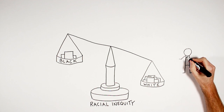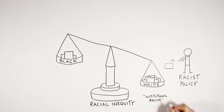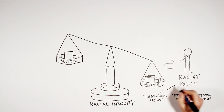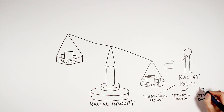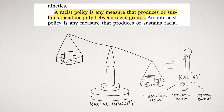Kendi encourages us to focus on racist policy, as opposed to terms like institutional racism, structural racism, and systemic racism. Those terms obscure the fact that the racial inequities we currently face are due to racist policies of the past. That inequity isn't inherent to all institutions and structures and systems — it's there because people put it there, through racist policies that can be overturned. A racist policy is any measure that produces or sustains racial inequity between racial groups.